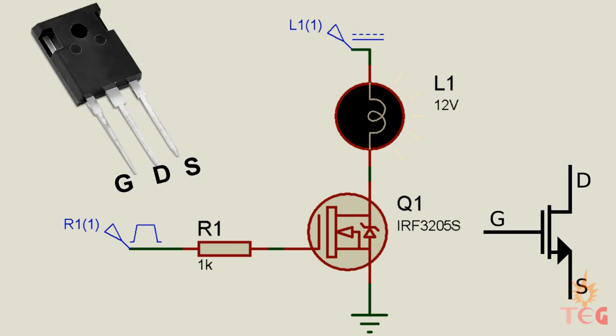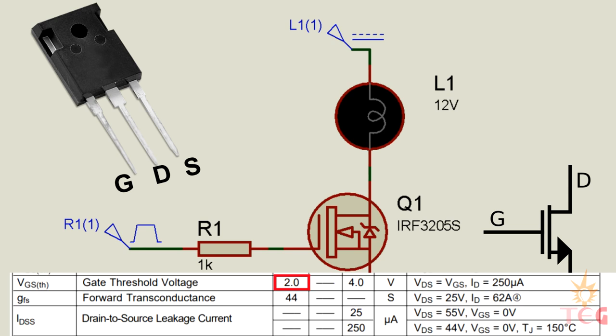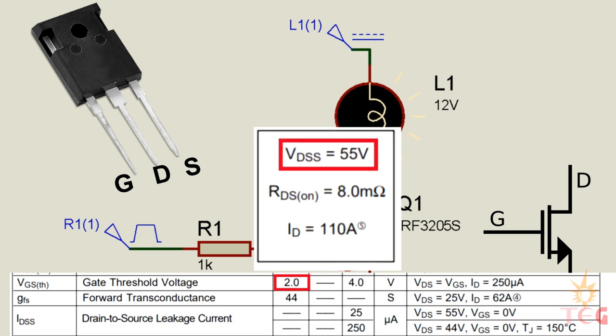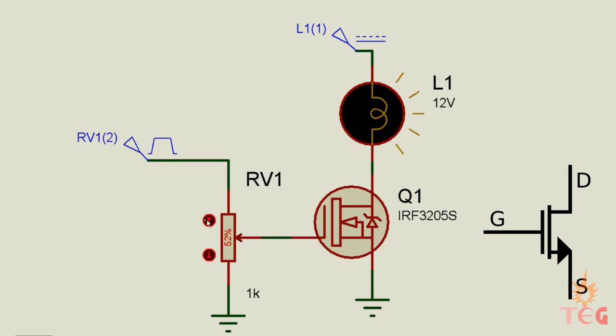MOSFET can switch the high output voltage connected between its drain and source if a threshold voltage is applied at its gate. This threshold voltage is generally very less than the voltage MOSFET is capable of switching or the voltage that is applied between its drain and source. Also, as the voltage at the gate of the MOSFET is increased beyond its gate threshold voltage, more and more current flows through drain to source.